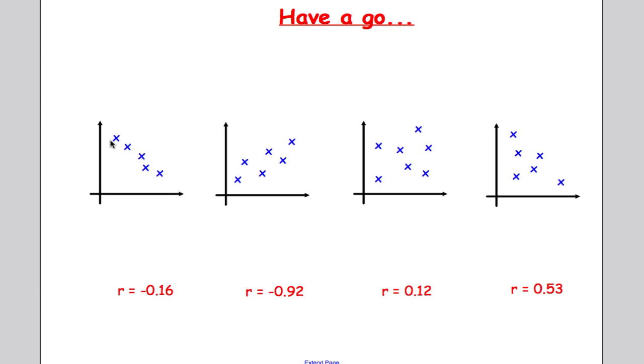Okay, hopefully you've had a go at that. The first one here, we can see it's negative correlation, it looks very strong so it's going to be very close to minus one, so that's going to go in there. This one is a positive correlation but it's not that strong, but in comparison to the other two it must be closer to one, so I'd match 0.53 to that one.